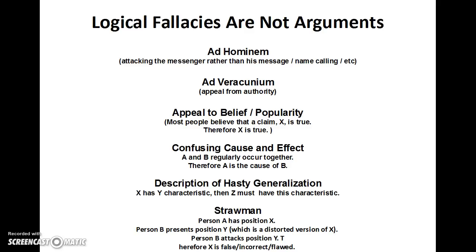Confusing causation and correlation is another fallacy. There's also hasty generalization — for example, saying everyone around me is Asian and they all have slanted eyes, therefore everyone in the world has slanted eyes. That's not true. And there's the straw man: person A has position X, person B presents a distorted version Y, attacks Y, and concludes X is false. I'll leave a link below with hundreds more of these fallacies.